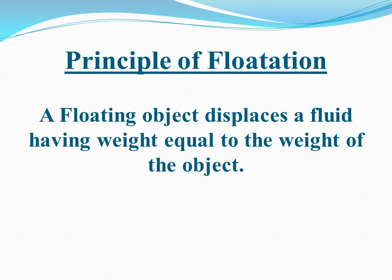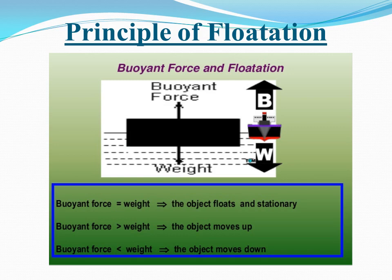Our next topic is the principle of floatation. According to this principle, a floating object displaces a fluid having weight equal to the weight of the object. For example, if a wooden block floats on water, its weight equals the weight of the liquid displaced by that wooden block. There are some conditions for a floating object.